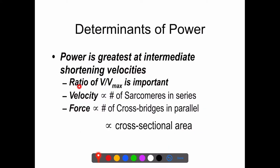The ratio of the velocity relative to the maximal velocity, v over v-max, is important. Velocity is proportional to the number of sarcomeres in series — that chain of sarcomeres, like how long your chain is. And force is proportional to the number of cross bridges in parallel, like how many muscle fibers you have in that cross-sectional area. So it's proportional to cross-sectional area.